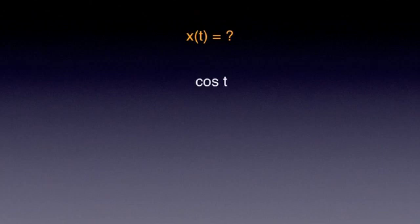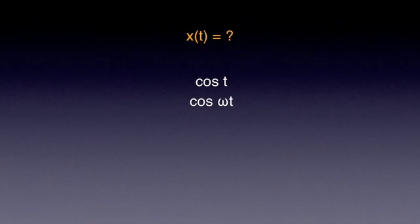So our solution for x(t) should contain cosine of t in some form. As we can easily imagine, when the body oscillates faster, the crests of the cosine function are closer together, and therefore we have to account for this in our equation. I'm introducing a constant omega, which is related to how fast the object oscillates: cosine of omega·t.